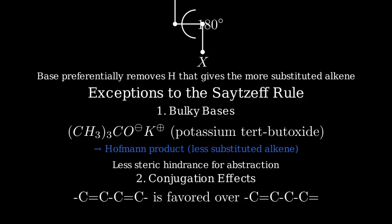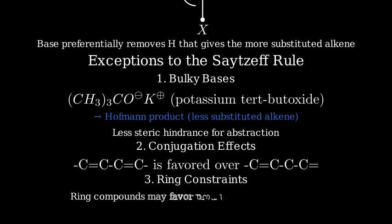Another exception occurs when conjugation is possible. Formation of a conjugated alkene, even if it's slightly less substituted, can be favored due to the additional stability from conjugation. Finally, ring constraints in cyclic compounds can sometimes lead to preferential formation of the less substituted alkene if it helps relieve ring strain.